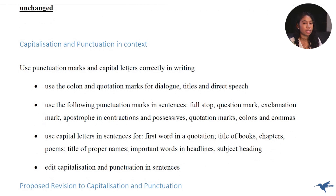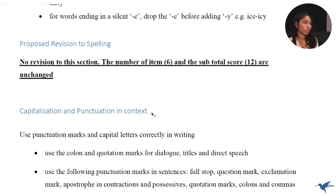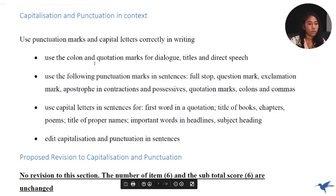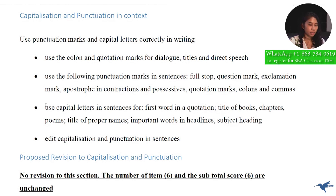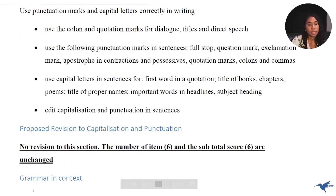Capitalization and punctuation — I really like this section. You have to use punctuation marks and capital letters correctly in writing. Make sure you read your instructions carefully; they usually tell you there is one incorrectly spelled word, one capitalization error, or one punctuation error in the given passage. Key areas include using a colon and quotation marks for dialogue, titles, and direct speech, as well as full stops, question marks, exclamation marks, apostrophes in contractions and possessives, and commas. There were no revisions to this section — six items, subtotal of six.